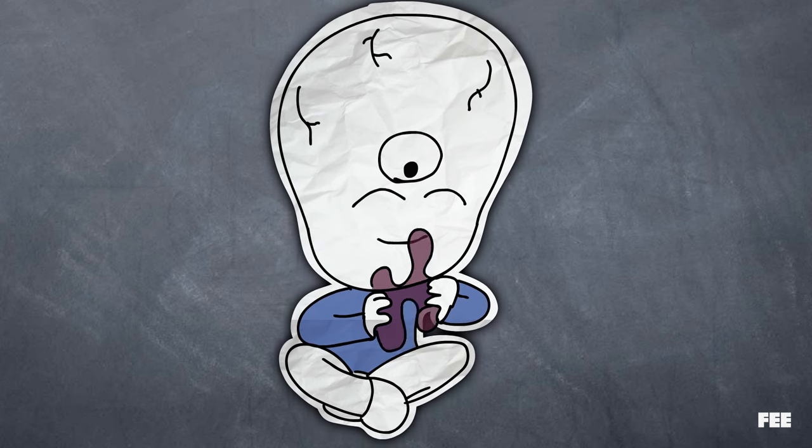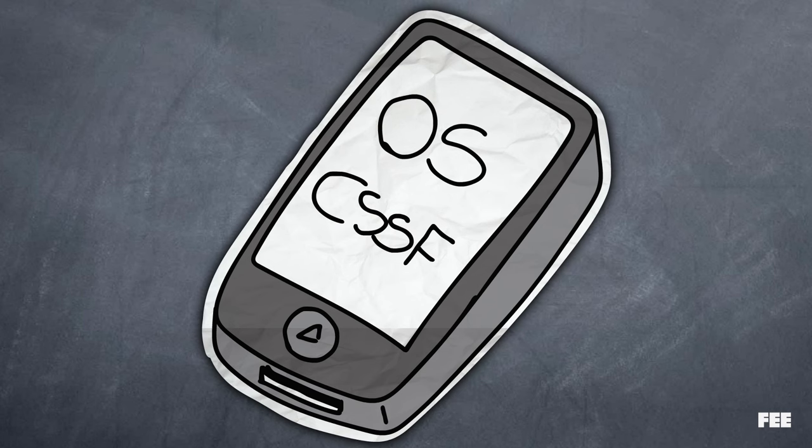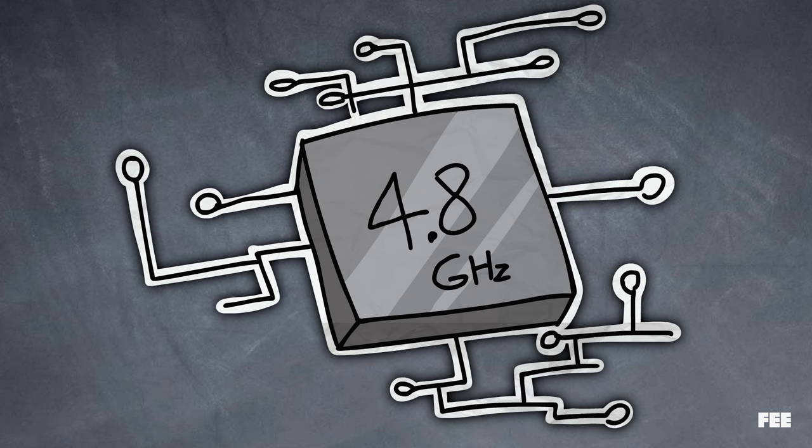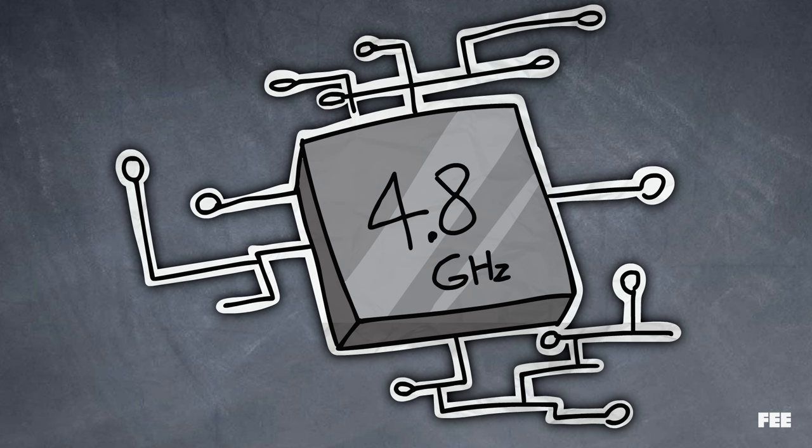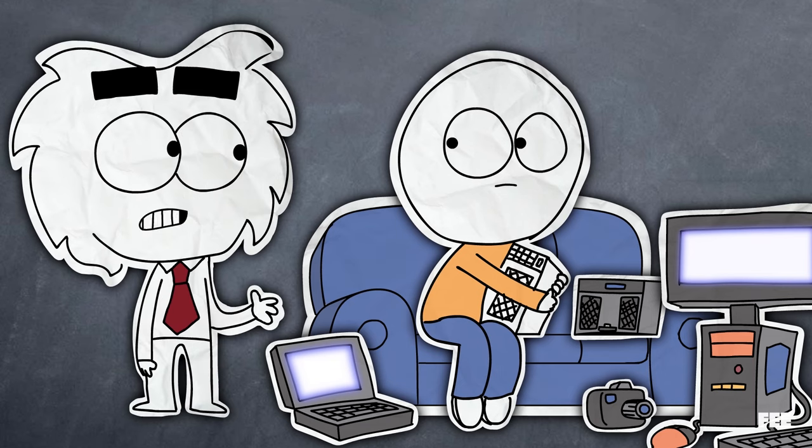No one person could make your cell phone, but a team of people could create a really good operating system for it, another could develop a really fast processor, and another team could create a really great screen for it. And within these teams, even more specialization occurs. Whoever's best at any part of the process fulfills that role.